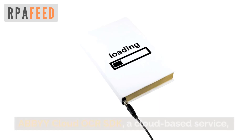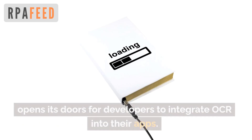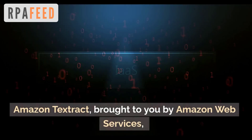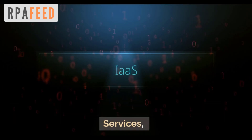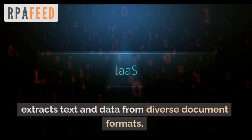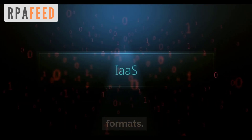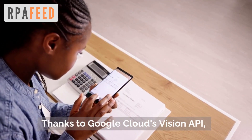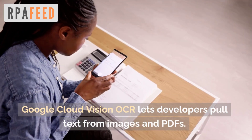Next in the list is ABBYY Cloud OCR SDK, a cloud-based service that opens its door for developers to integrate OCR directly into their apps. Then we have Amazon Textract by AWS — Amazon Web Services — which extracts text and data from diverse document formats. Then we have Google Cloud Vision OCR; thanks to Google Cloud's Vision API, it lets developers pull text from images and PDFs.